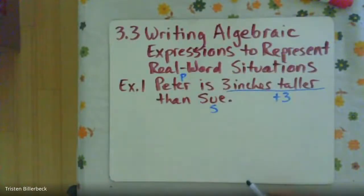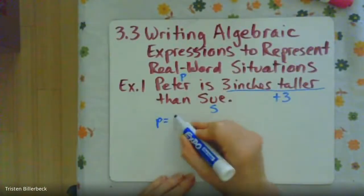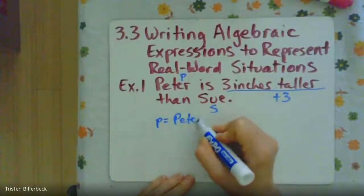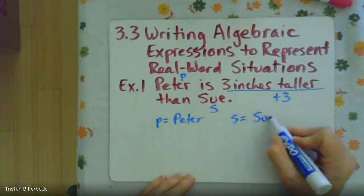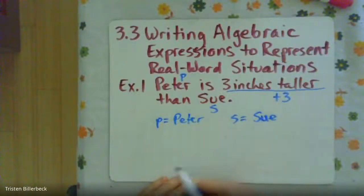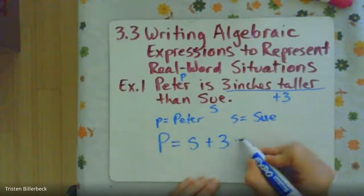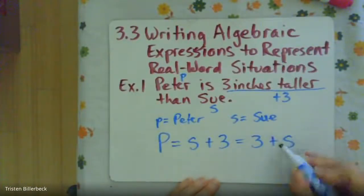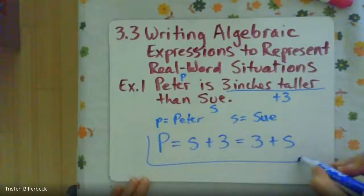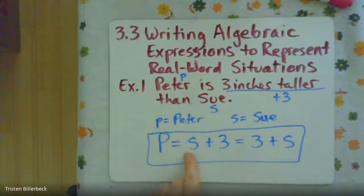Peter will be P. So we can write out P equals Peter, and S equals Sue. So we can write Peter equals Sue's age, but we're going to add plus three inches. So we could have also said three inches plus Sue. Either way, that would be an appropriate equation for this. So Peter is three inches taller than Sue.